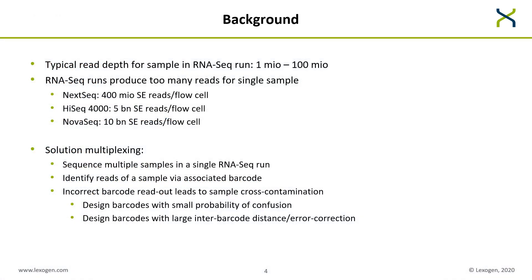The typical read depth for a single sample in an RNA-seq run lies between 1 million and 100 million reads. An RNA-seq run on the other hand produces many more reads than that — for a NextSeq we have 400 million single-end reads per flow cell and for a NovaSeq we have up to 10 billion single-end reads per flow cell. The solution to this discrepancy is multiplexing: we sequence multiple samples in a single RNA-seq run and identify the reads of a sample via an associated barcode, which is a short sequence of nucleotides designed beforehand.